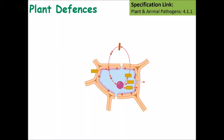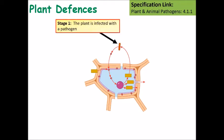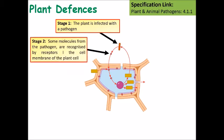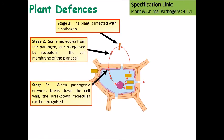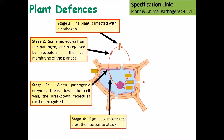If we now look at the physical process of a plant's cellular response: the plant is infected by the pathogen, and some molecules from the pathogen are recognized by receptors. When pathogenic enzymes start to break down the cell wall, that releases other molecules which are recognized by the plant cell. This causes the activation of signaling molecules that alert the nucleus that it needs to respond to the infection.